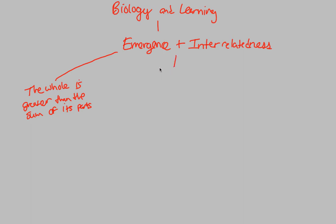We can look at emergence by looking at the interrelatedness of things. Specifically, we can focus on what are known as the levels of biological organization. This is something you're going to have to know through and through — it's very important, and most of us already know it even before taking this course. The levels of biological organization are very simple; we're going to go from big to small.